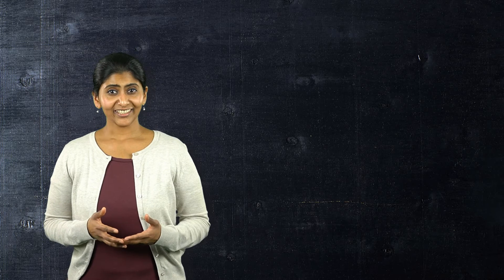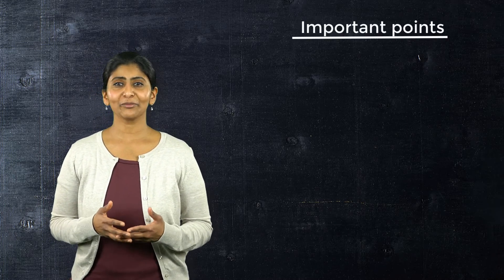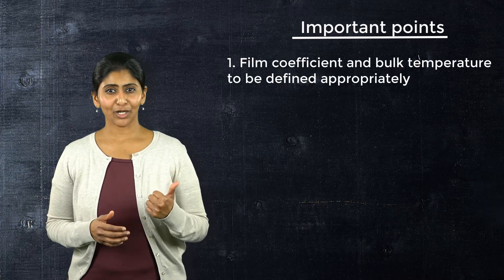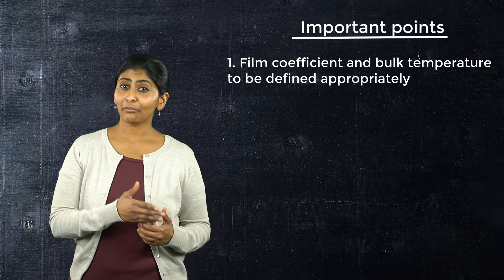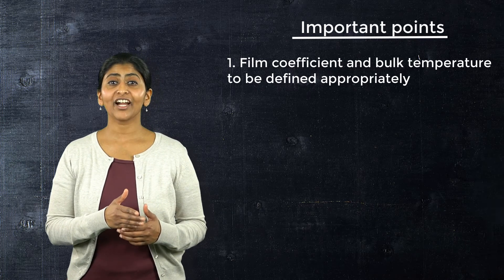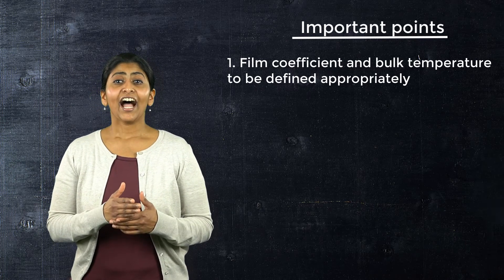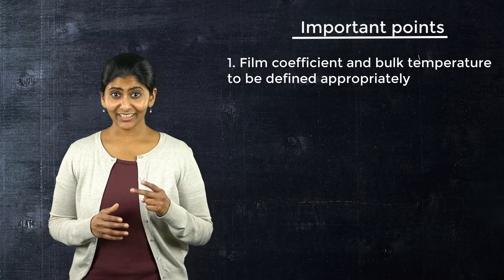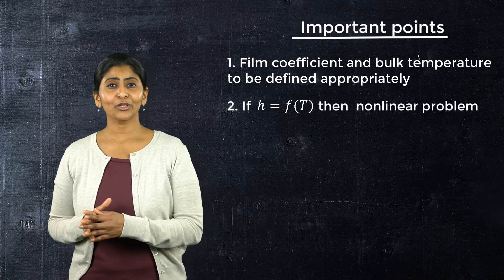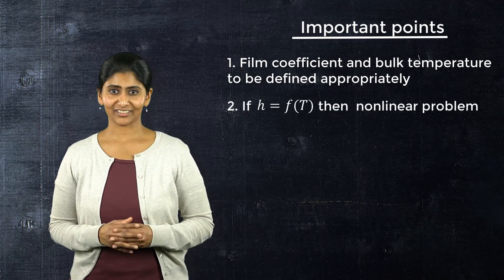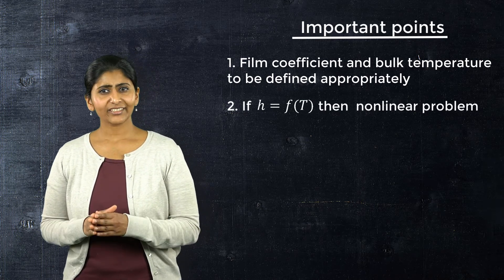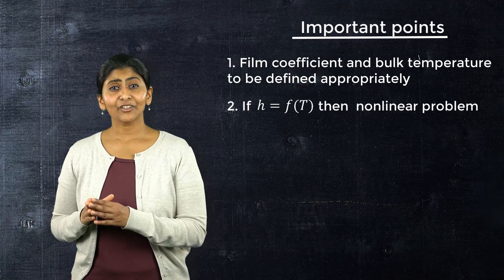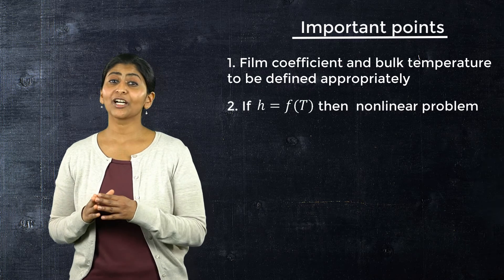So, to summarize, here are some important points to keep in mind. One, when applying convection boundary condition, film coefficient and bulk temperature should be defined appropriately by the analyst as the fluid flow is not being modelled. Second, we indicated earlier that film coefficient depends on temperature. So, if we describe the film coefficient as a function of temperature, then the convection boundary condition becomes non-linear.